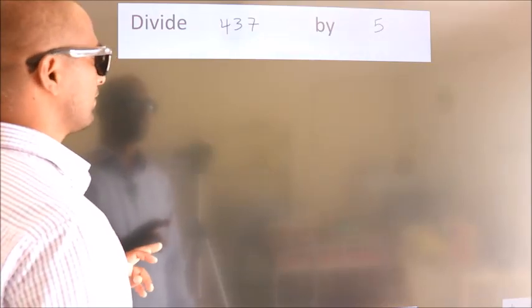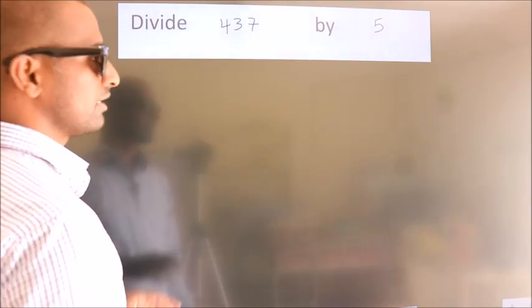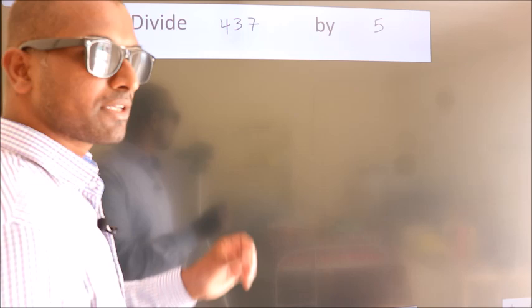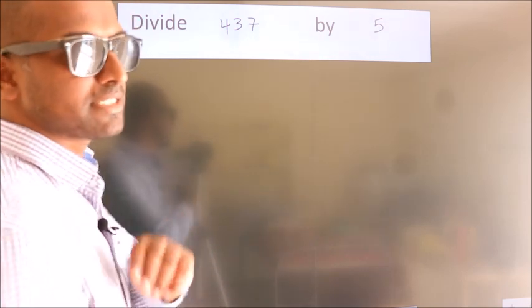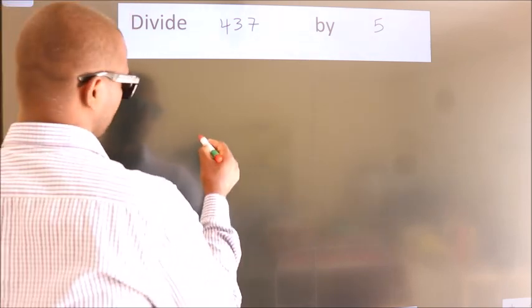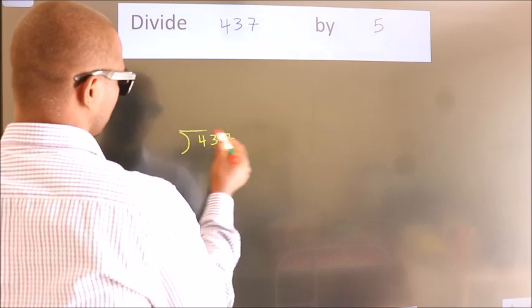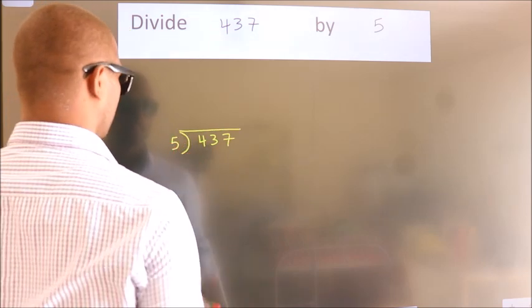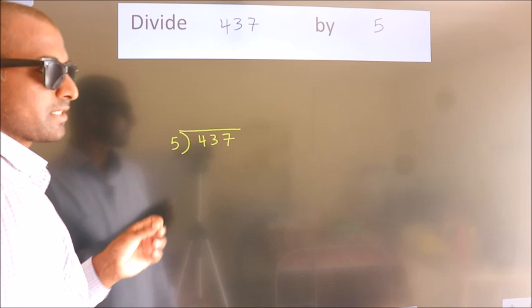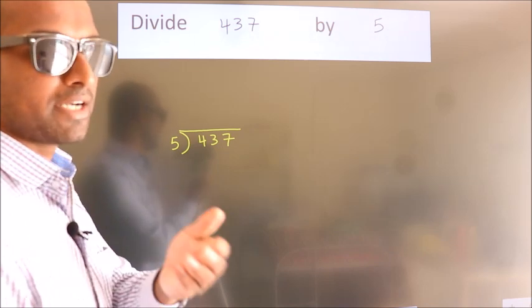Divide 437 by 5. To do this division, we should frame it in this way. 437 here, 5 here. This is your step 1. Next,